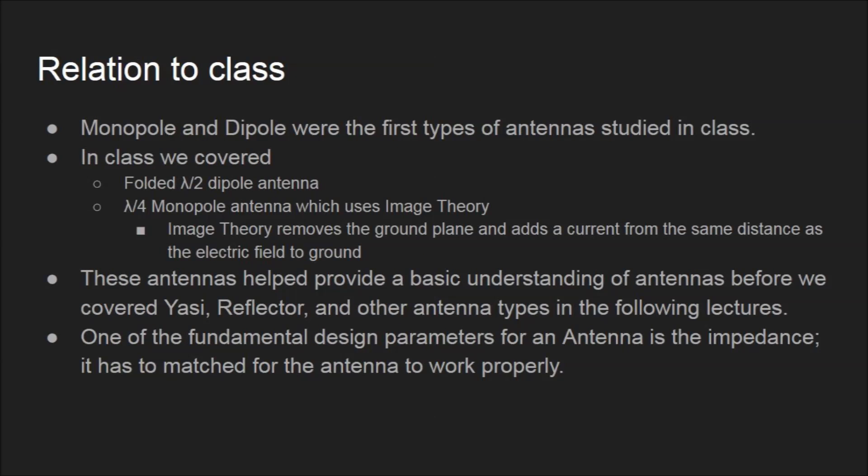Over the past few weeks, we have covered antennas in class. The monopole and dipole antennas were the first types of antennas studied. More specifically, we looked at folded half-wavelength dipole antennas and quarter-wavelength monopole antennas. From these two, we learned image theory. Image theory removes the ground plane and adds a current from the same distance as the electric field to ground.